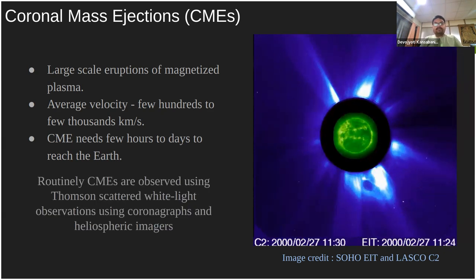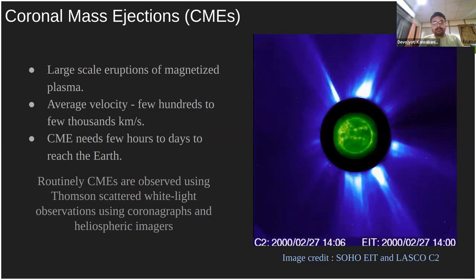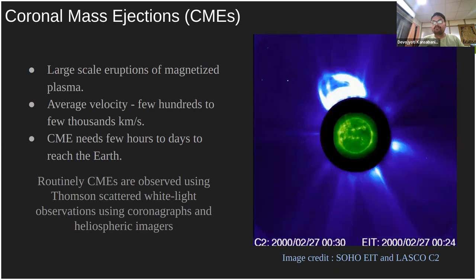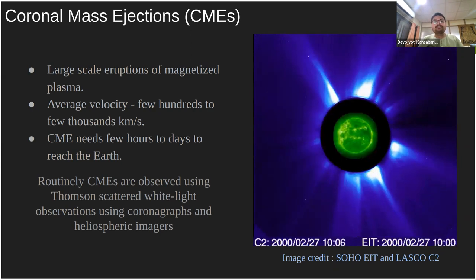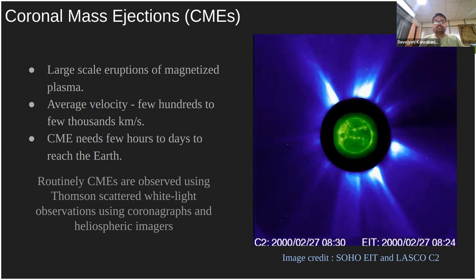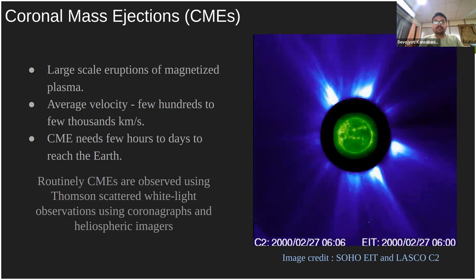During this propagation, a CME may undergo several deformations and its propagation direction can change. It is important to understand how these deformations happen, and how the CME evolves from coronal heights through the heliosphere to near-Earth space, in order to accurately predict space weather in the near-Earth region.